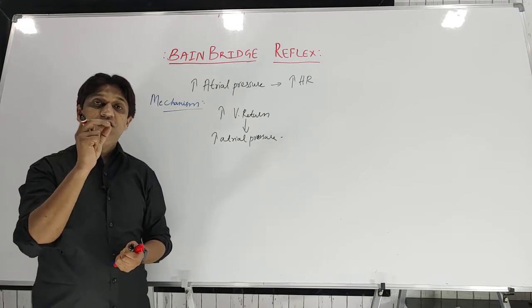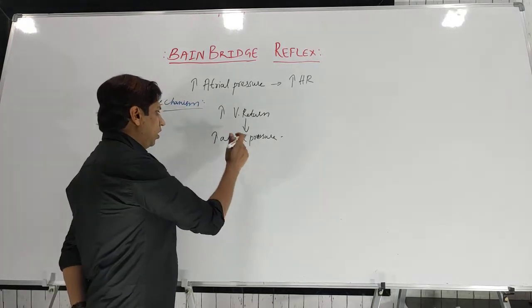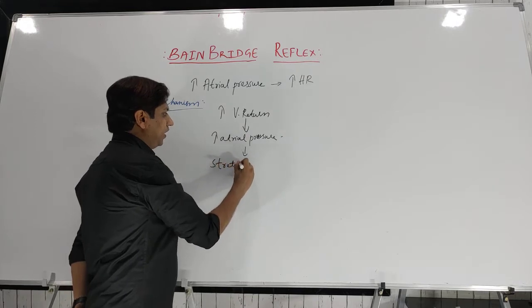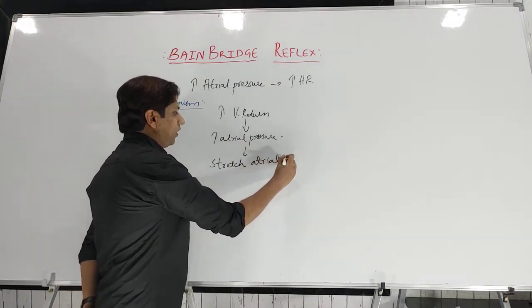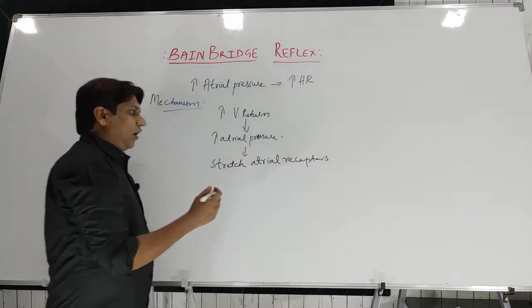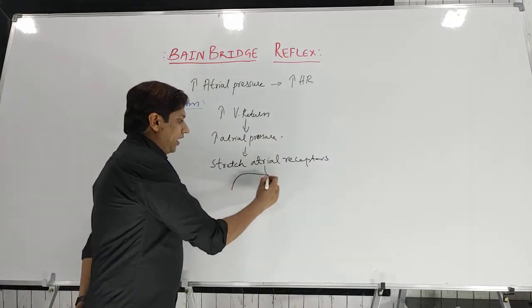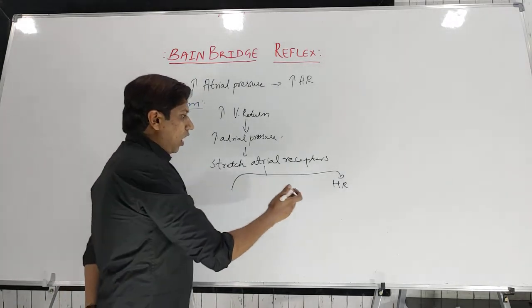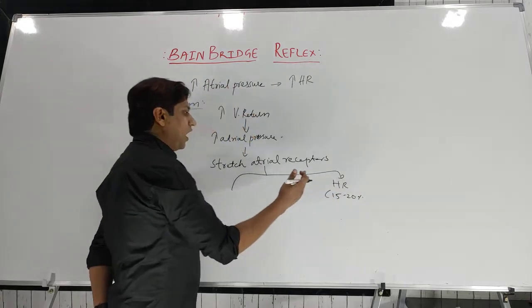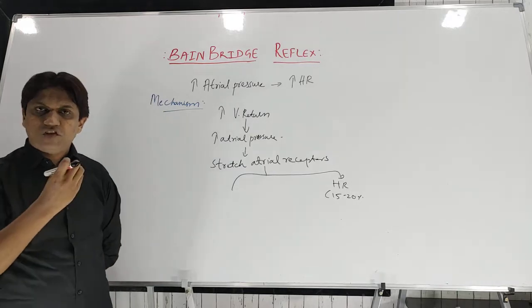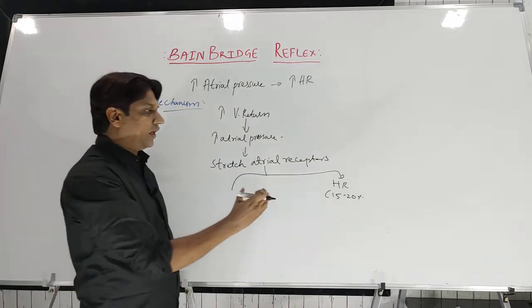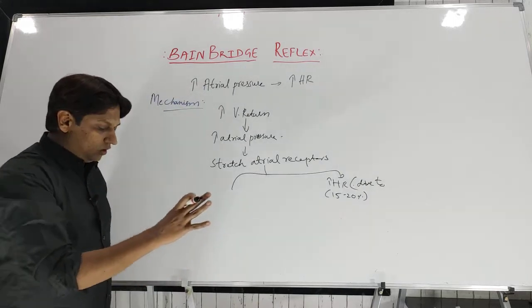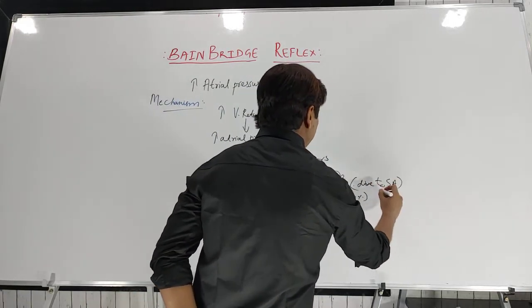Baroreceptors generally sense change in pressure, whereas these atrial receptors are volume receptors. Because of the increase in atrial filling, there is stretching of these atrial receptors, which ultimately causes an increase in heart rate. The increase in heart rate is about 75% of the normal. Out of that 75%, around 15 to 20% of the increase in heart rate is mediated directly due to stimulation of the SA node, because stretching of the right atrium also stimulates the SA node.